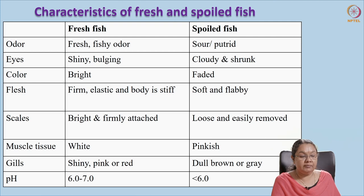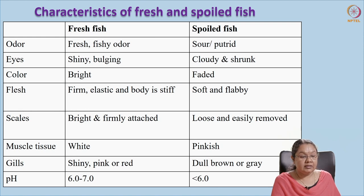The muscle tissue might be white or red but may turn pinkish in spoiled fish — do not confuse this with the natural pinkish musculature, as we have seen that musculature is of three types: red, white, and pink. This pinkish color in spoiled fish is because of deterioration. The gills, as mentioned earlier, become dull brown or gray in the spoiled fish.